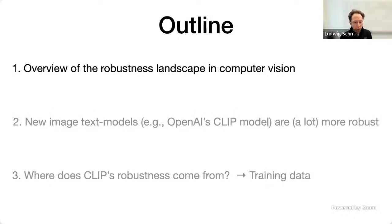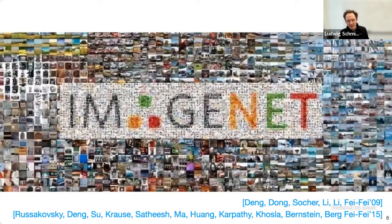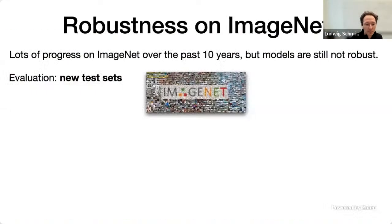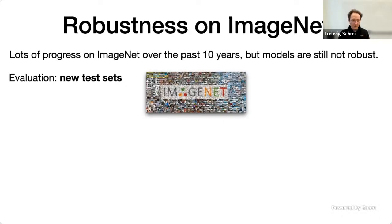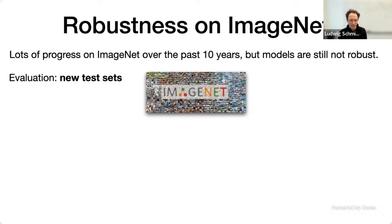We'll do this in the context of my favorite machine learning dataset, ImageNet. We are at Stanford, at least virtually today. I think everyone is familiar with ImageNet. This is still a very useful resource because we have built up so much experimental infrastructure and knowledge around this dataset, which makes it a really rich testbed for experimenting with new models and testing hypotheses.